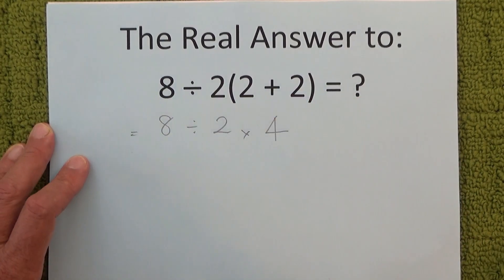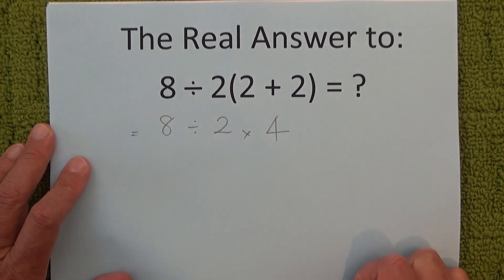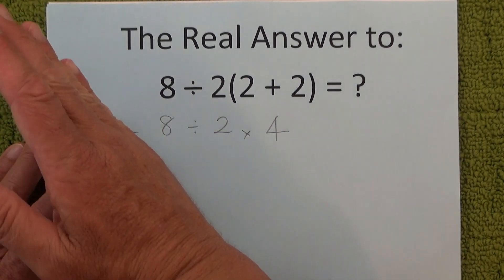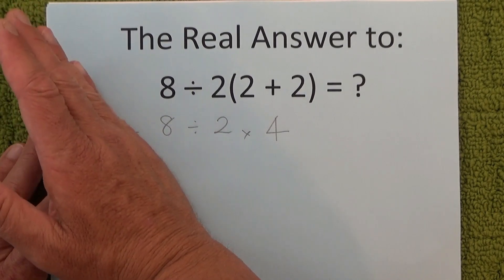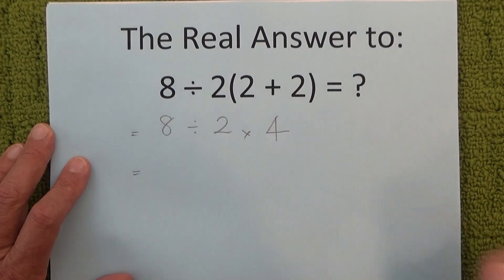We still need to do that and that's multiplied by 4 and because division and multiplication are seen to be equal then we just move or start from the left and move across to the right to get the answer to this equation.